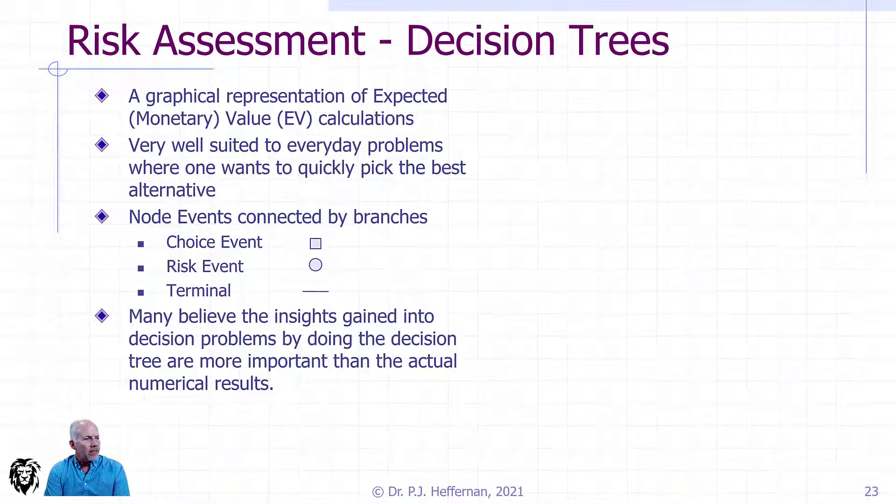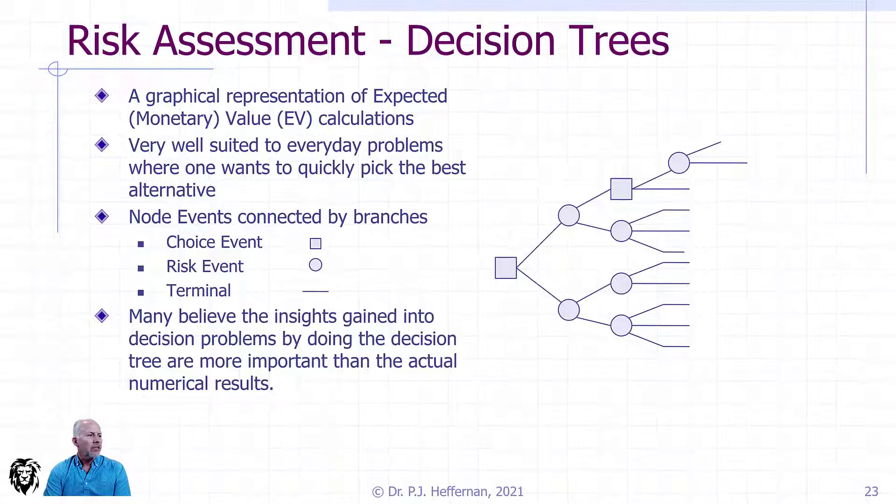We set it up in a tree-type diagram. We have a choice event where a choice is asked, and then we have a risk event which breaks down into probabilities. If we get to the end of our calculation, each one would be associated with an equivalent value, which can then sum up to collective equivalent values as you move back through the tree.